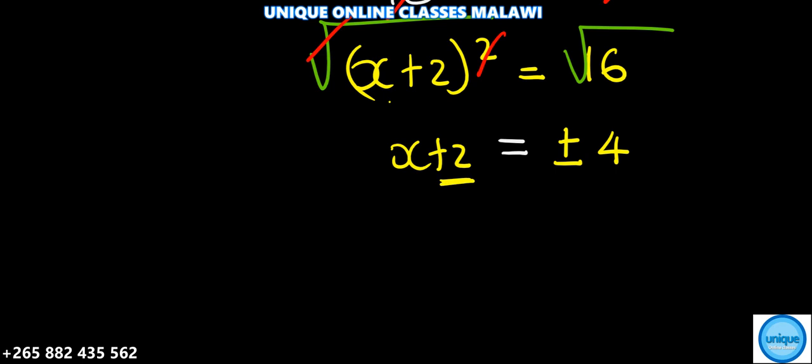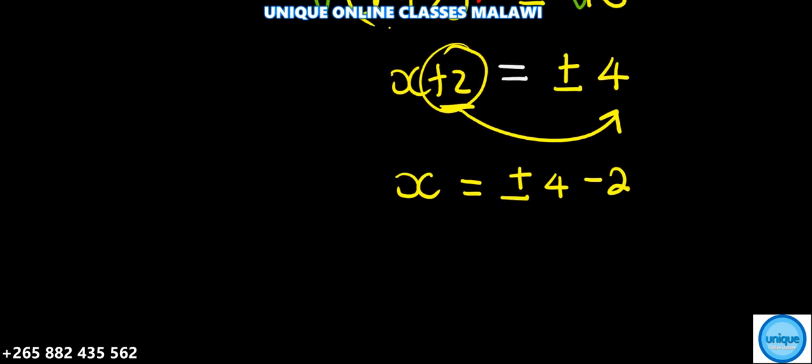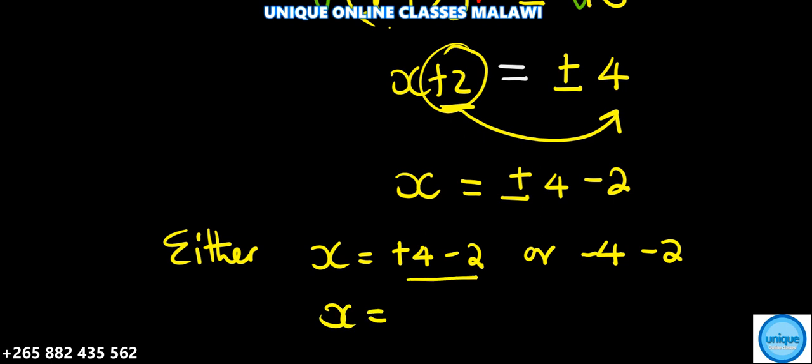Now we make x the subject of the formula by moving this 2 to the right side. So we're going to have x equals plus or minus 4 minus 2. So it's either x equals positive 4 minus 2, or negative 4 minus 2. So here x equals positive 4 minus 2, which is 2, or negative 4 minus 2, which is negative 6.